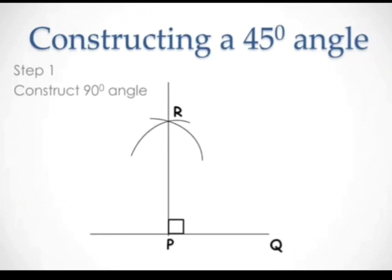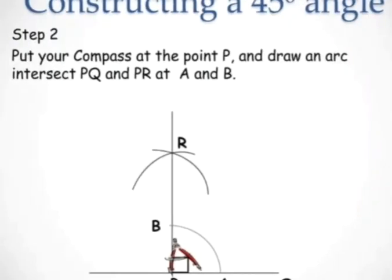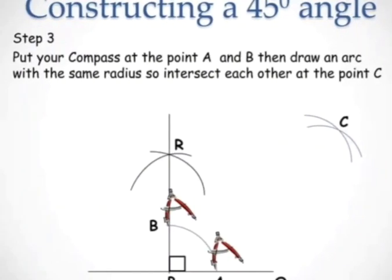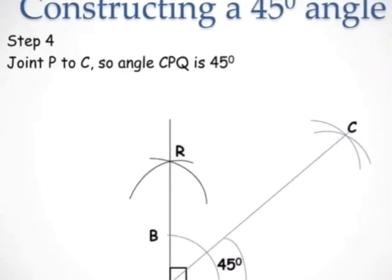The 90 degree angle is RPQ. Put your compass at point P and draw an arc intersecting PQ and PR at A and B. Then put your compass at points A and B and draw arcs with the same radius — they intersect each other at point C. Join P to C, so angle CPQ is 45 degrees.